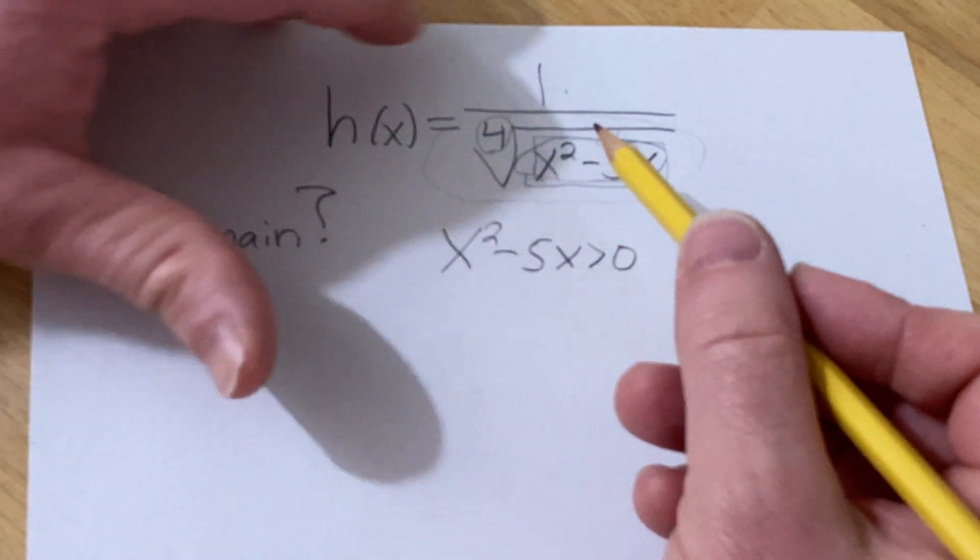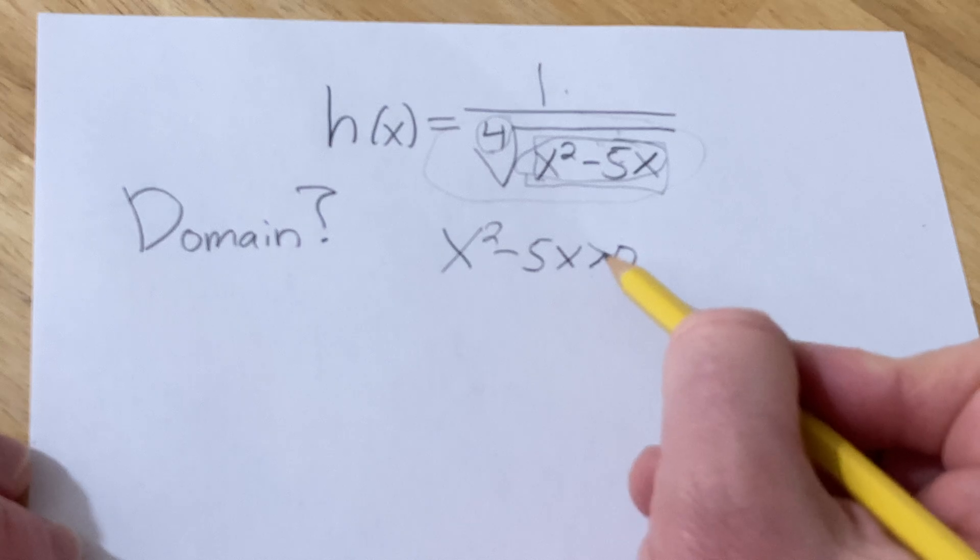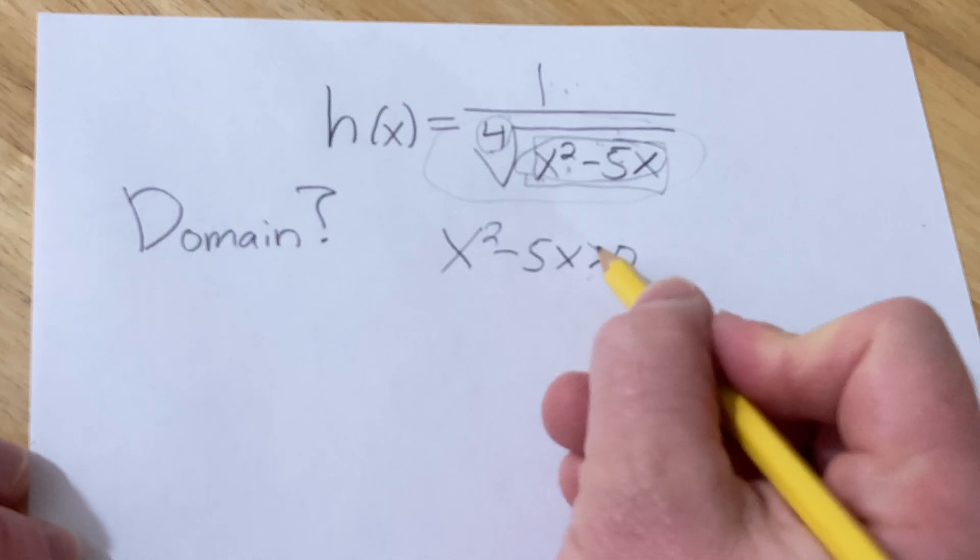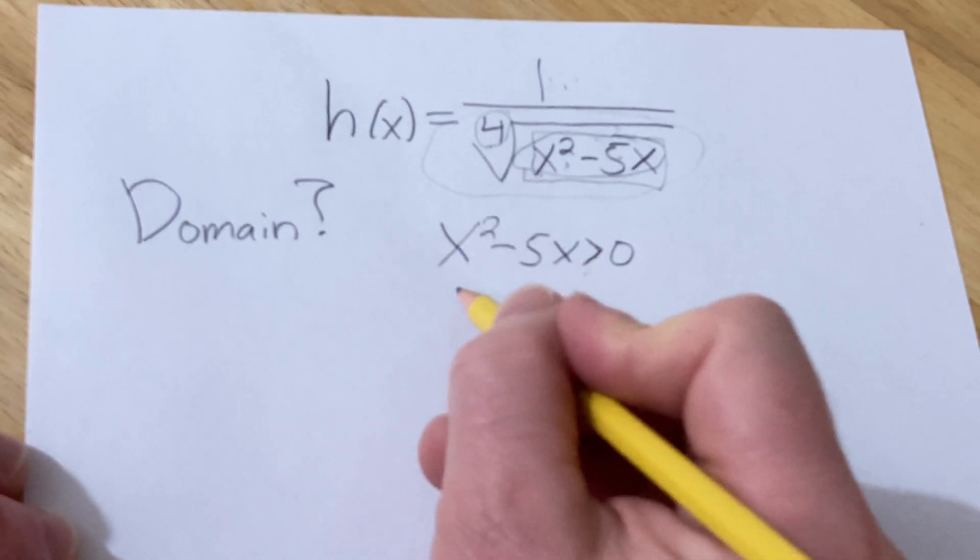If it wasn't a fraction, you would do greater than or equal to, but because it can't be zero—if it's zero then you have zero on the bottom—you want to put greater than. This factors; you can pull out an x.